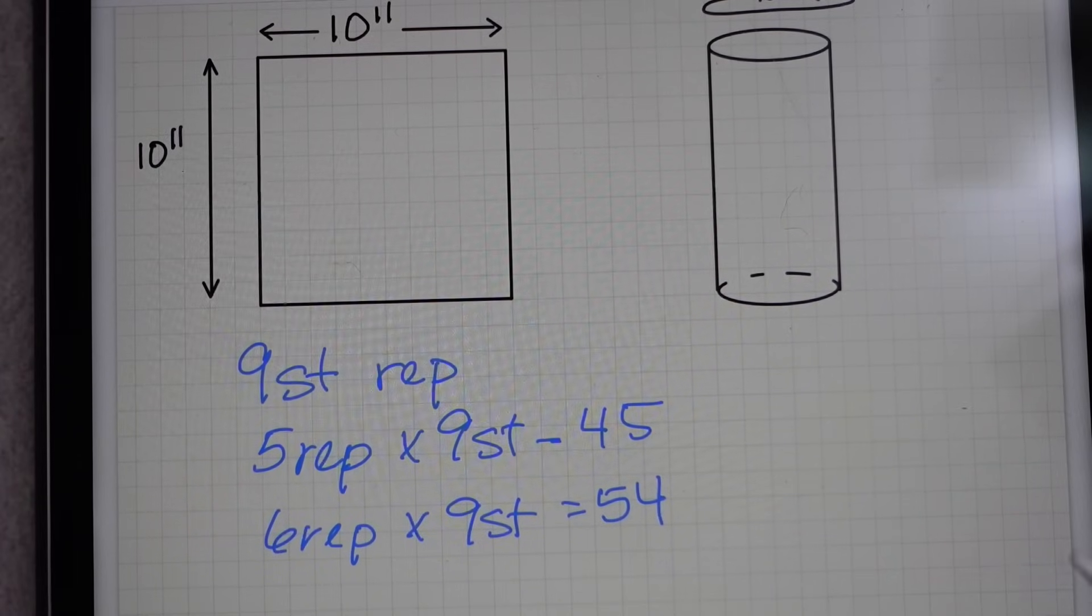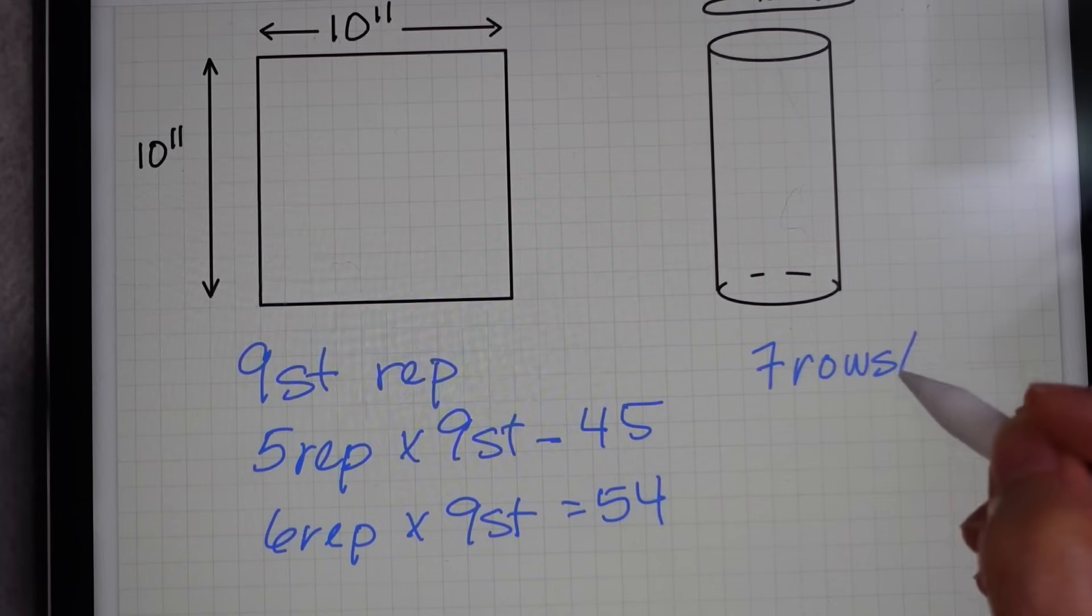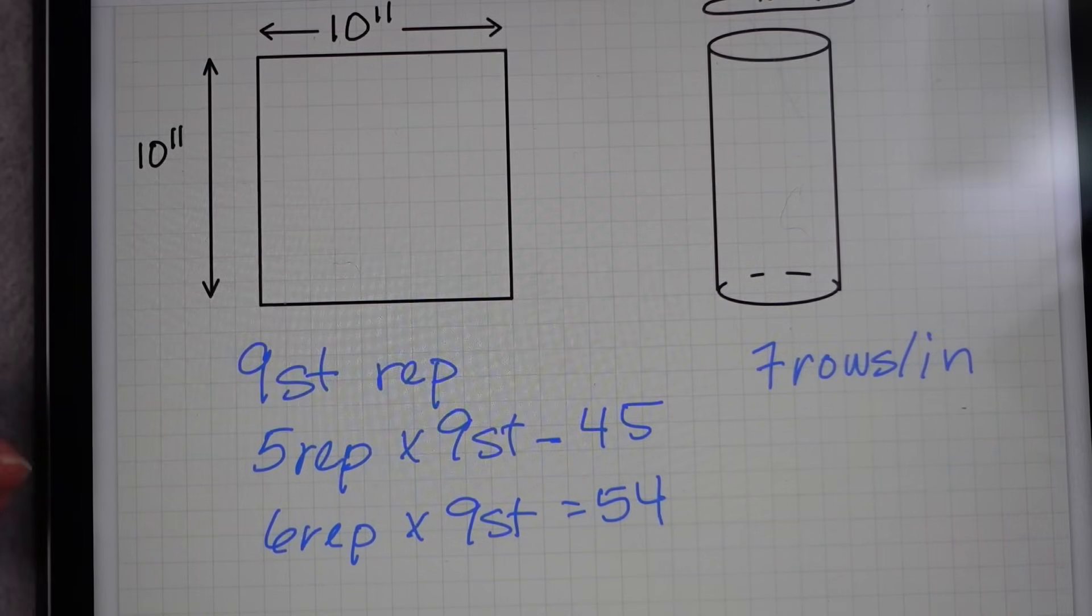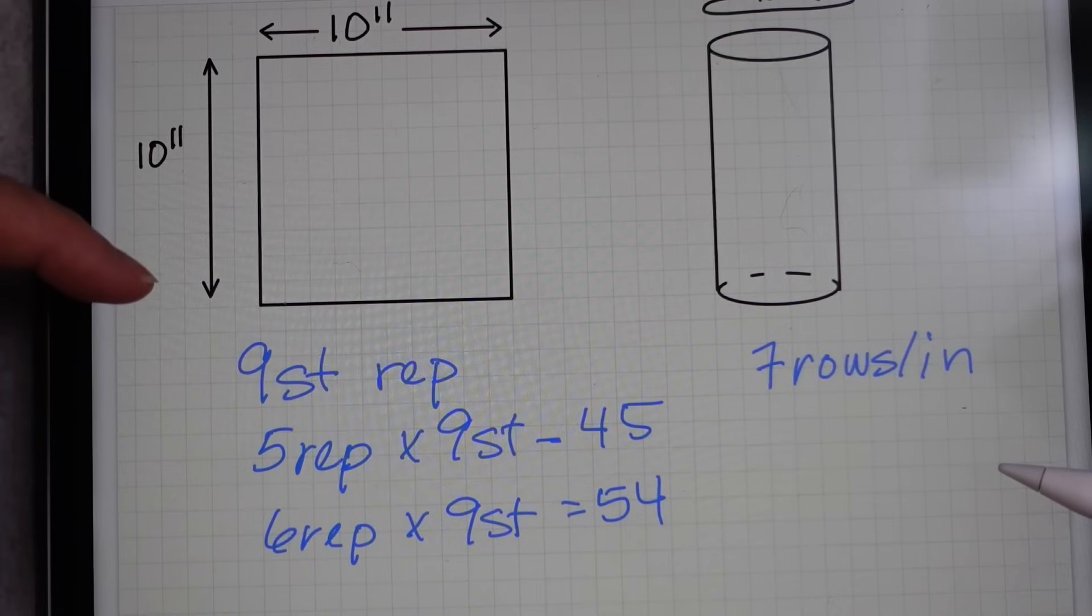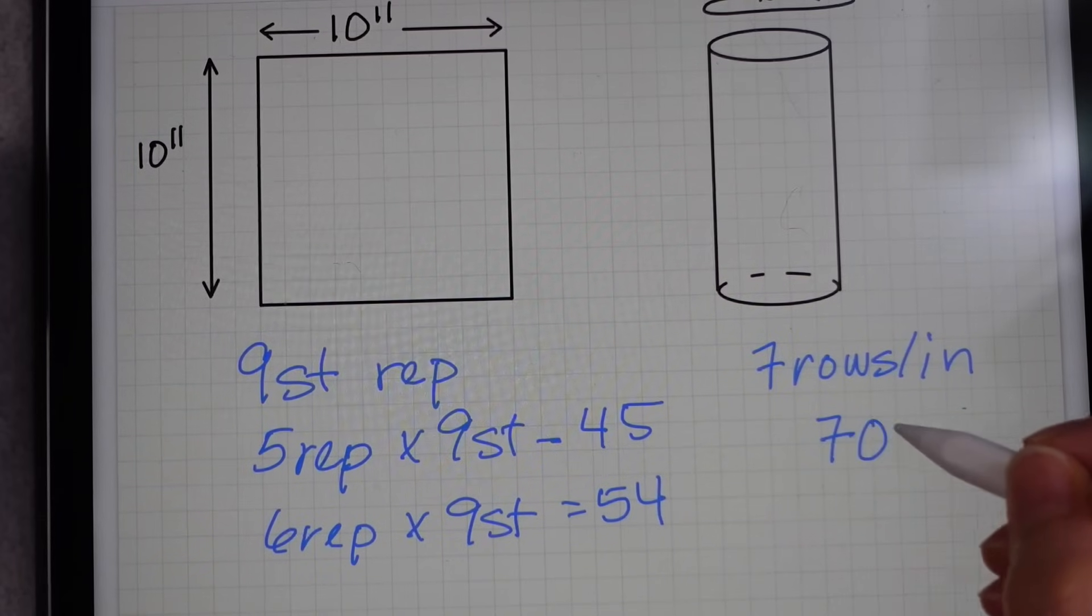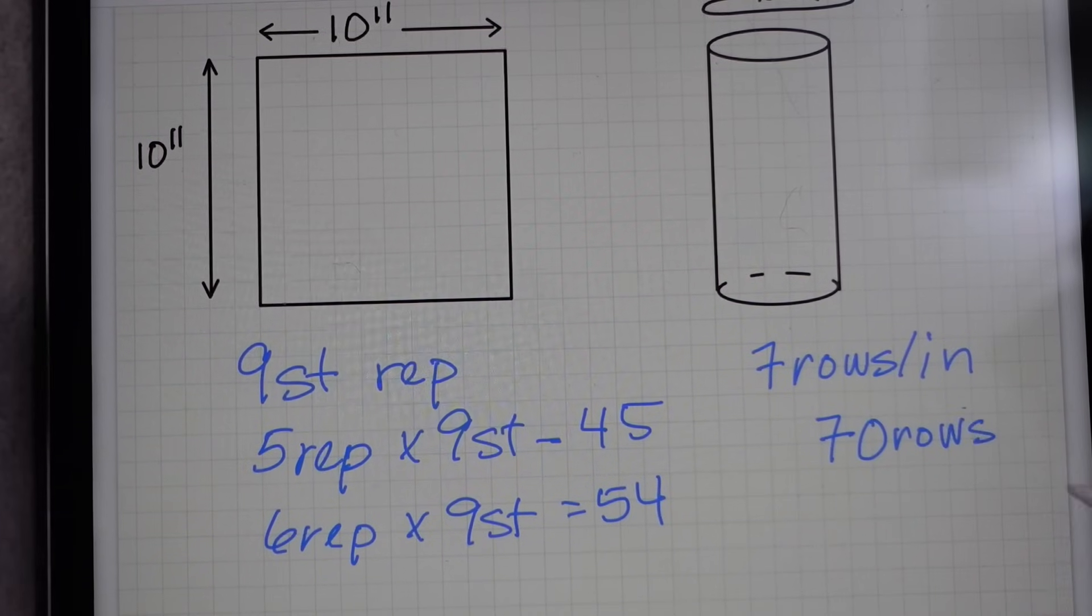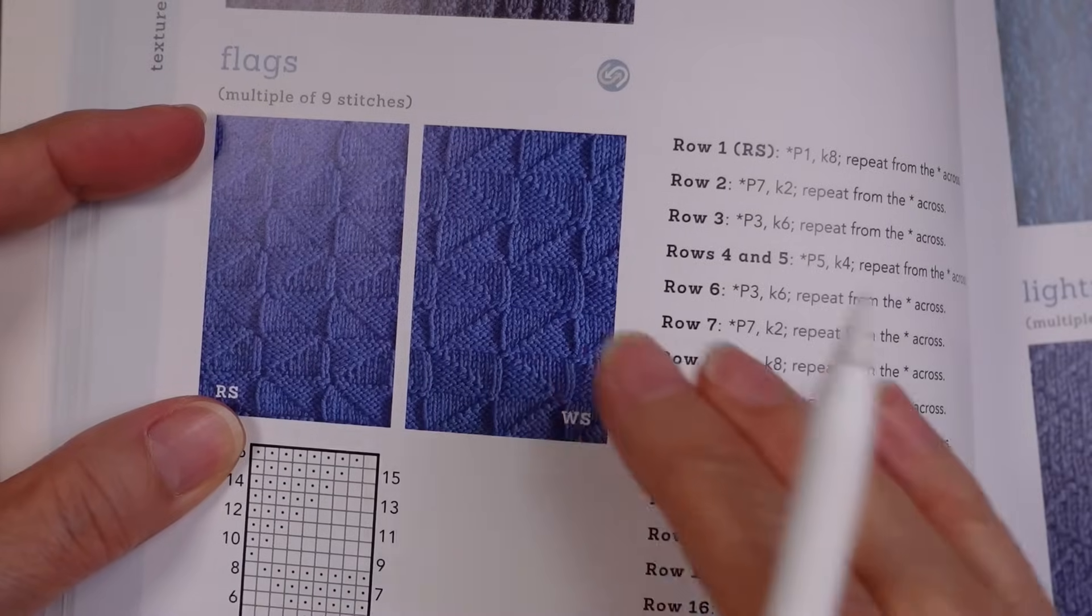So in order to figure out how many rows we need, we need to know our row gauge. So we were talking about five stitches per inch, which is really common for a worsted weight yarn. And seven rows per inch is really common in that same yarn weight. Again, these are hypothetical gauges. This is just an example. If I wanted 10 inches worth of fabric with seven rows per inch, that would mean I need somewhere around 70 rows. And again, we can fudge it a little bit in one direction or another, particularly if having something exactly 10 inches isn't important.